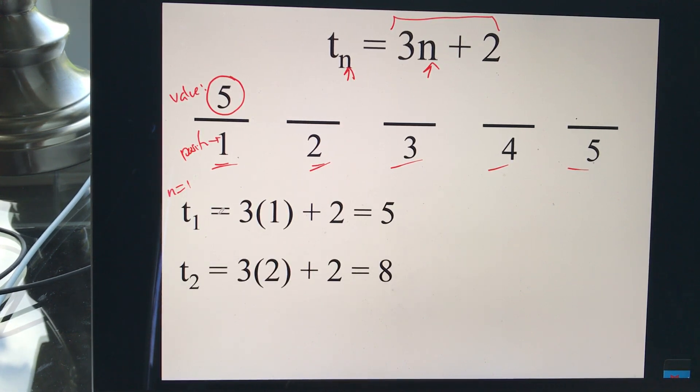And from here, it's pretty simple. Term 2, I plug in 2. 3 times 2 is 6, plus 2 is 8. Term 3, I plug in 3. 3 times 3 is 9, plus 2 is 11. I mean, obviously, you can do this, and so on and so on. Keep going, keep going, and so on.